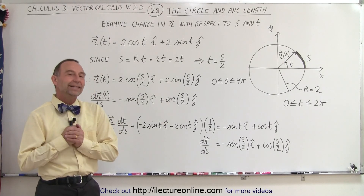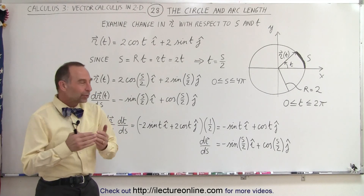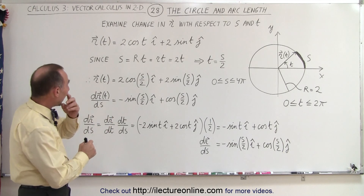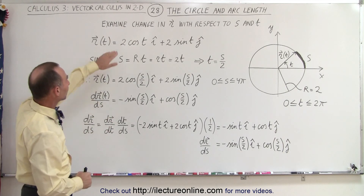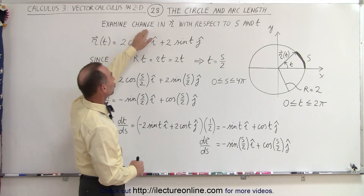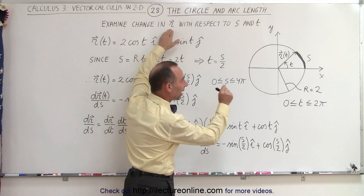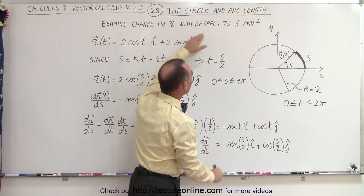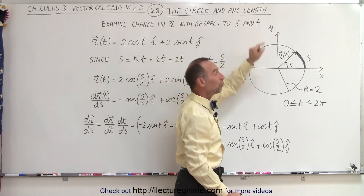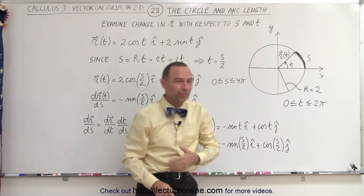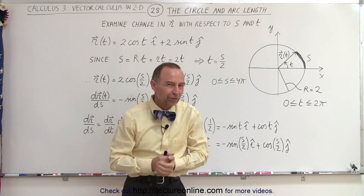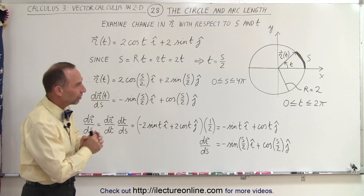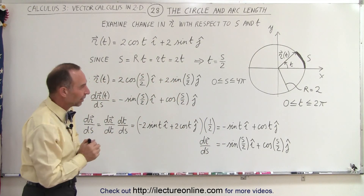Welcome to our lecture online. Here we're going to take a look at the circle arc length and examine the change in the position vector to any point on the circle with respect to the arc length and with respect to the parametric variable t, and the relationship between them.